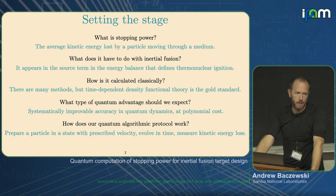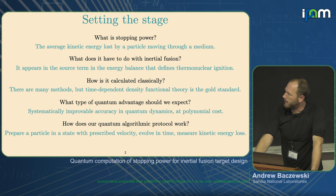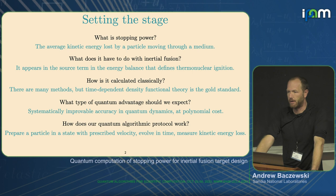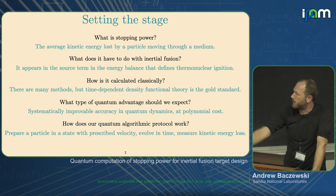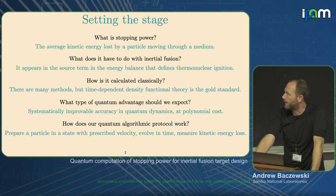How do we compute stopping powers presently? There are many methods, but the state-of-the-art gold standard is real-time time-dependent density functional theory. It's a mean field theory, so it's relatively efficient — allowing us to go to relatively large supercell sizes — but it's also relatively inaccurate. That's actually a good feature when it comes to prospects for achieving quantum advantage, since the type of quantum advantage we should expect is arriving at a way to systematically improve accuracy in representing quantum dynamics.